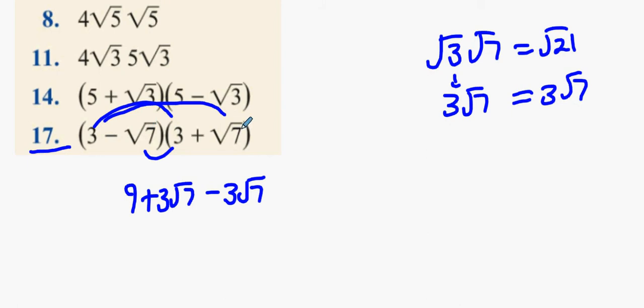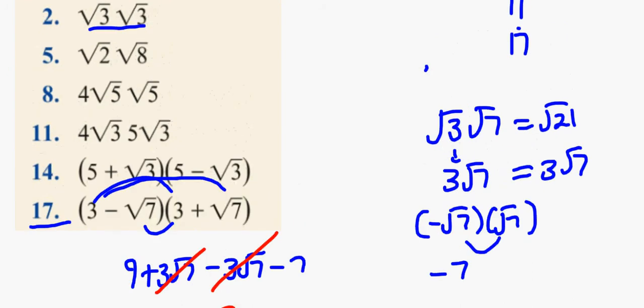And then, finally, minus root 7 by plus root 7. So it's minus root 7 multiplied by plus root 7. Ignore the minus sign for a minute. Just do root 7 by root 7. Plus 7. So the answer is minus 7. Now, look what happens here, guys. What happens to the 3 root 7 and the minus 3 root 7? 9 take away 7. 2. So I just did 2, 11, and 17 then.